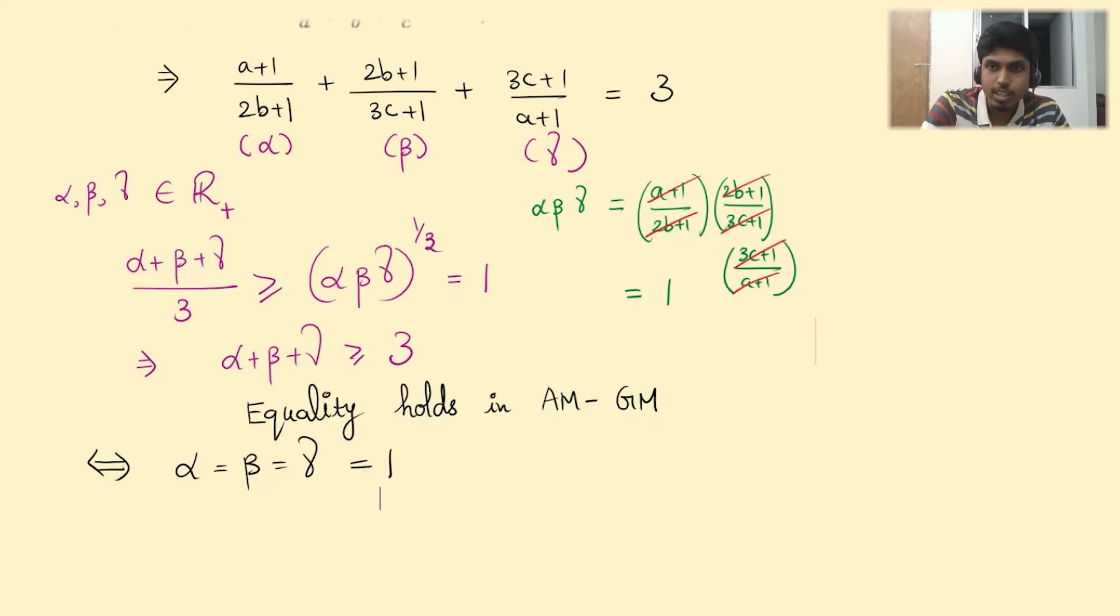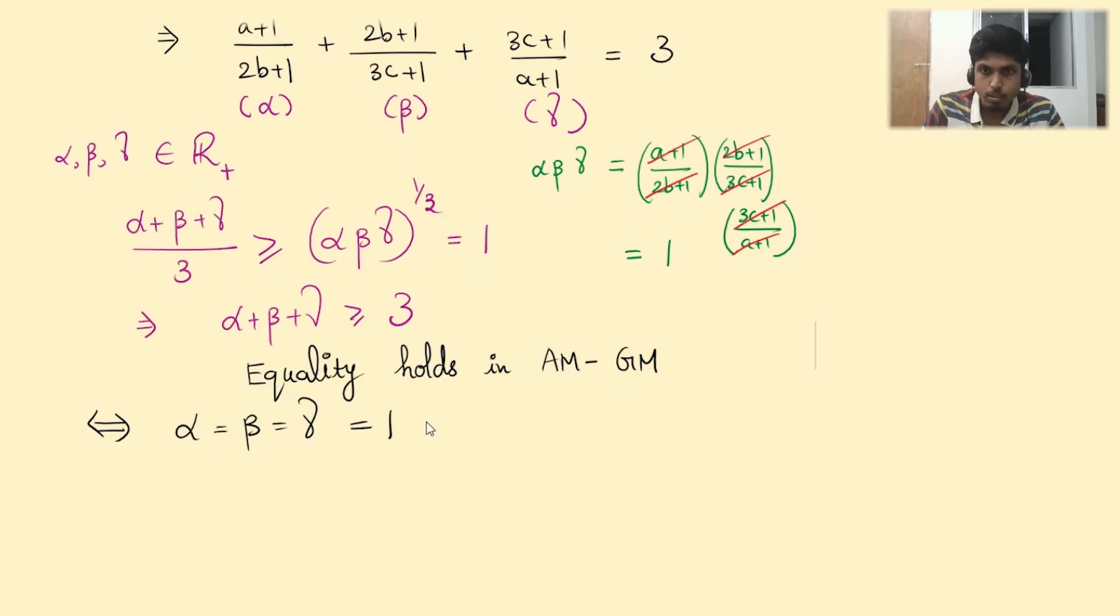This condition helps us a lot because we thus infer that (A+1)/(2B+1) = (2B+1)/(3C+1) = (3C+1)/(A+1) = 1. And consider A, 2B, and 3C as a single entity. So this shall imply A = 2B = 3C.